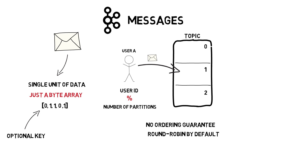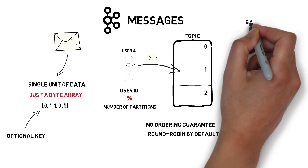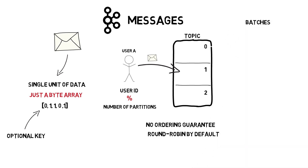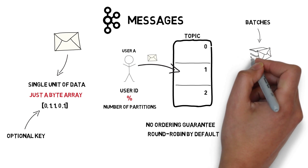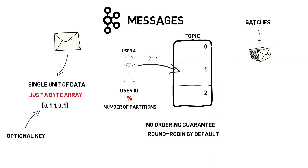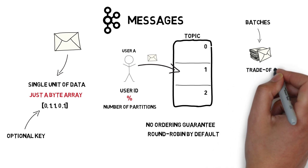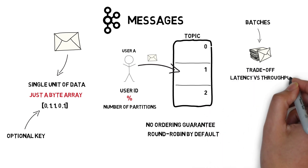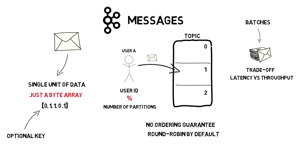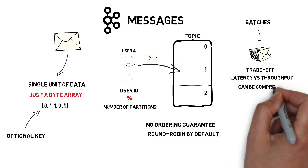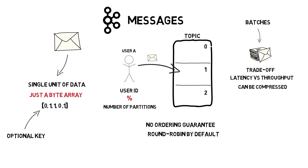Sending single messages over the network creates a lot of overhead. That's why messages are written into Kafka in batches. A batch is a collection of messages produced for the same topic and partition. Sending messages in batches provides a trade-off between latency and throughput, and can be further controlled by adjusting a few Kafka settings. Additionally, batches can be compressed, which provides even more efficient data transfer.